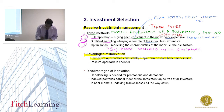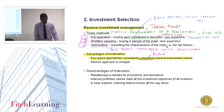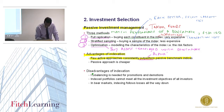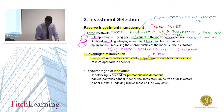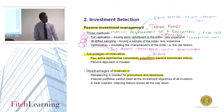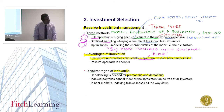The term for outperforming the benchmark is alpha. Do active funds generate alpha? They may do, but after the fees you're paying, it may no longer be alpha for you. There are also promotions and demotions to consider: the FTSE 100 is reconstituted every quarter — companies are demoted out and others are promoted in — so there are trading costs associated with that as well.